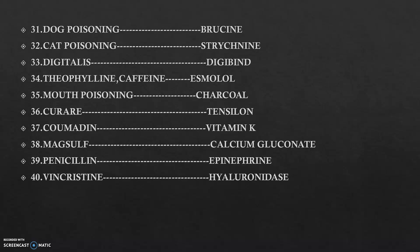In case of dog poisoning, it is bromine. In case of cat poisoning, it is strychnine. For digitalis toxicity, we use digibind — binding to digibind. For theophylline and caffeine, whenever more of these are consumed, we use esmolol as the antidote. For oral poisoning, charcoal is used — charcoal is actually considered a universal antidote because of its adsorption capacity.